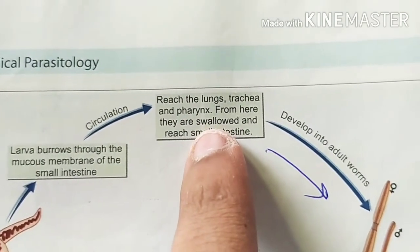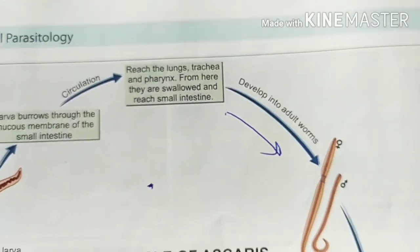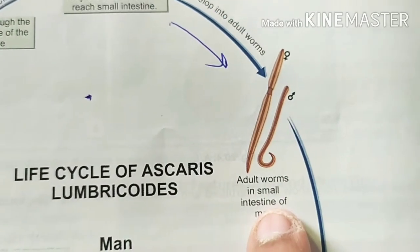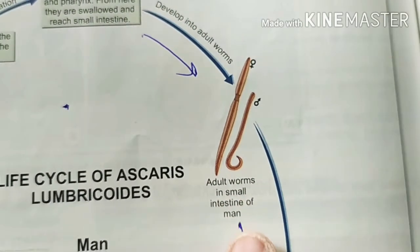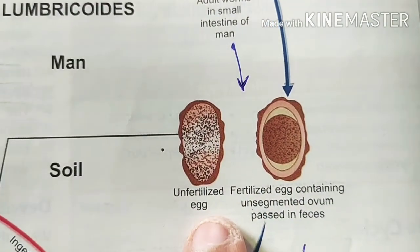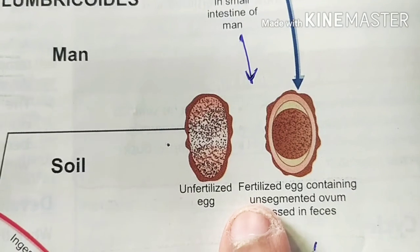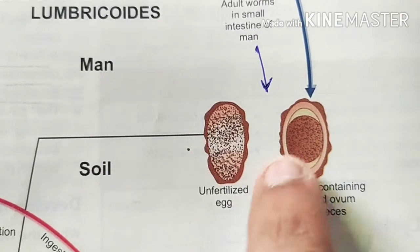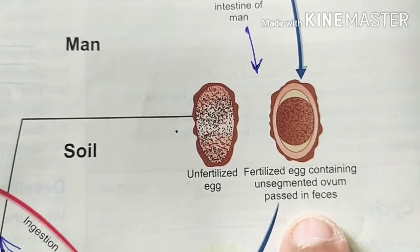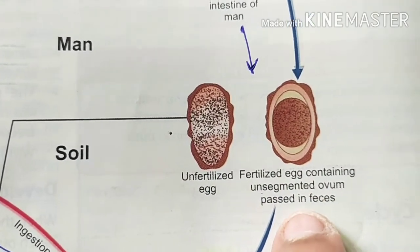Through the circulation, the larva reaches the lungs, trachea, and pharynx. Afterwards, adult worms — both male and female — develop, and they then produce fertilized and unfertilized eggs.